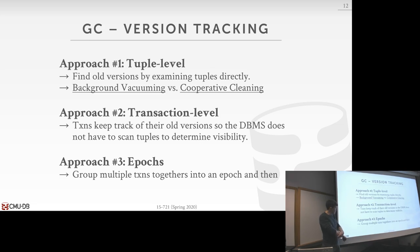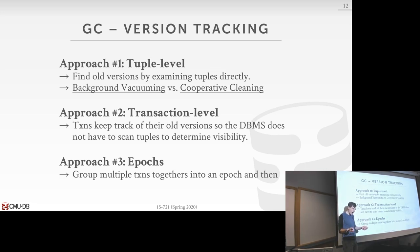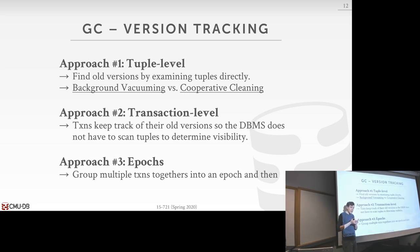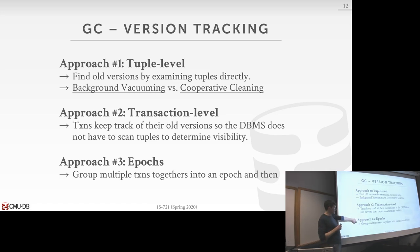The garbage collector has a view of all running transactions and their timestamps, and can identify which invalidated versions are now prunable. The last approach is epoch-based — similar to transaction-level but you group transactions under the same epoch. This is basically a counter advancing forward in time. When you move from one epoch to the next, you can determine if any transactions could still be seeing something from a previous epoch, and if not, reclaim everything invalidated in that epoch. We'll see this again when we cover the BW-tree on Monday.